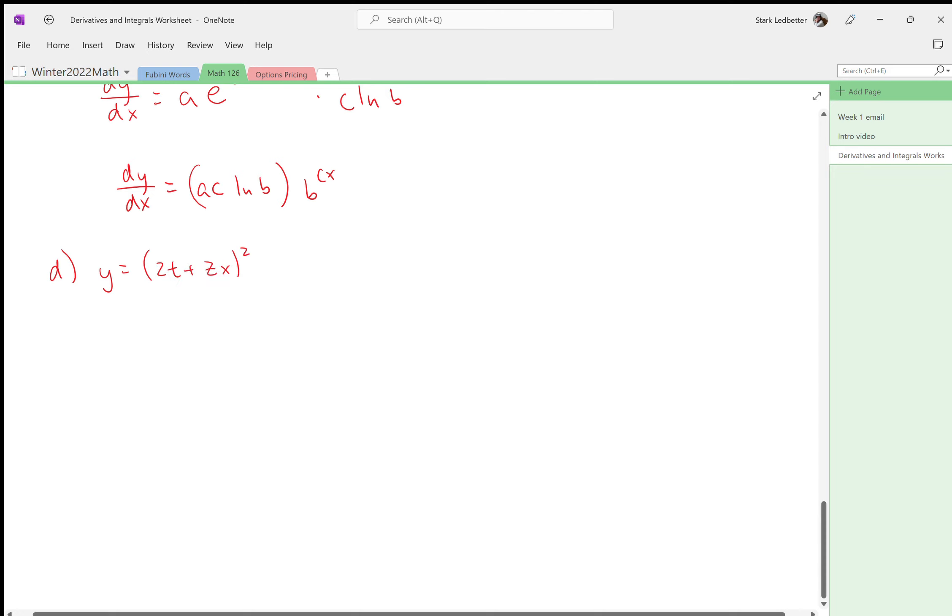Part d: y equals 2t plus zx, all squared. Okay, so we haven't done multi-variable calculus yet, so we're treating z as a constant. T and z are constants; every letter that's not x is a constant. That won't be true in a few weeks, but it is true now, so enjoy it while you can.